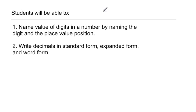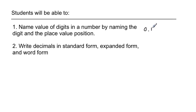All right, so by the end of this lesson, you should be able to do two things. Number one, name the value of digits in a number by naming the digit and then the place value position. So let me give you a quick example of that. So if I had a number of 0.14 and I wanted to know what is the value of that digit...